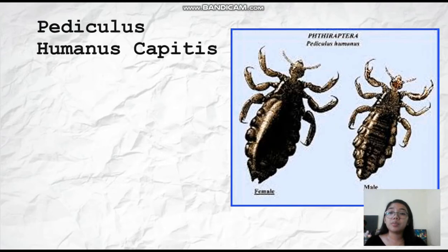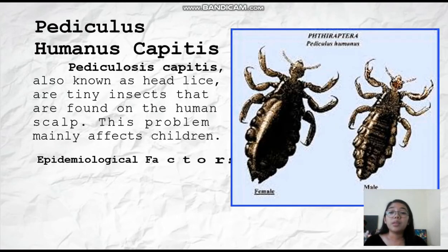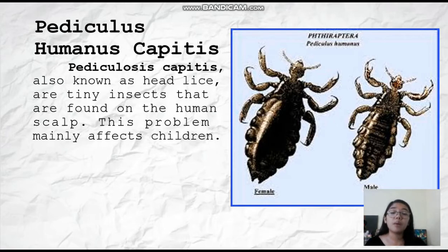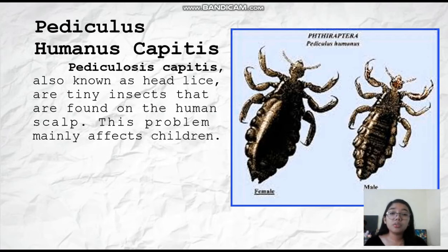So now let's talk about pediculosis humanus capitis. Pediculosis capitis, also known as head lice, are tiny insects that are found on the human scalp. This problem mainly affects children. As you can see in this picture, the female lice is much larger than the male, and this species is the most common of the three. Its average length is 1 to 2 millimeters. The lice are wingless with a long, dorsoventrally flattened, segmented abdomen, and their color is gray to white.